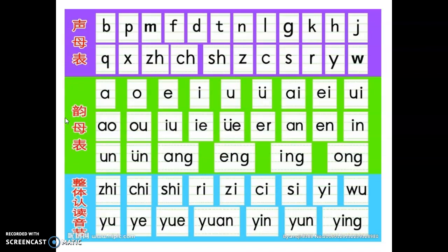韵母表, the vowels or finals. 啊, 哦, 呃, 耶, U, Y, A, A, V, A, O, O, U.